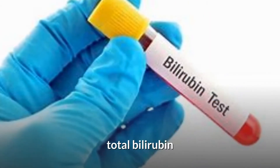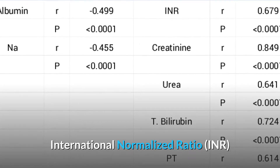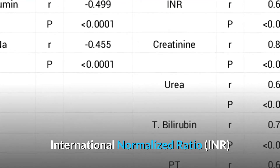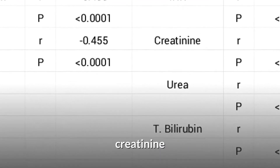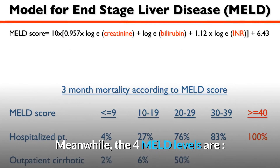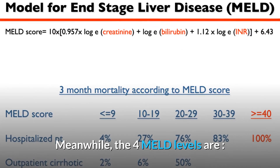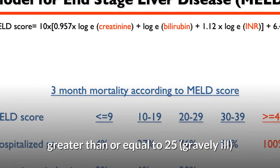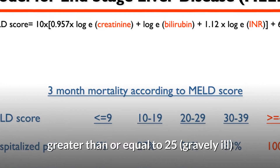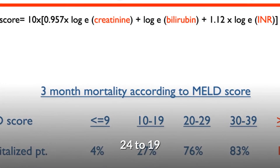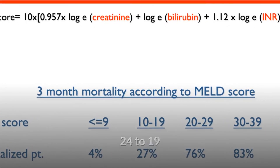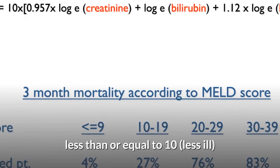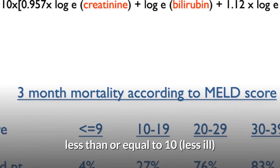The MELD score is calculated using a mathematical formula with three lab results: total bilirubin, international normalized ratio (INR), and creatinine. The four MELD levels are: greater than or equal to 25 (gravely ill); 19–24; 11–18; and less than or equal to 10 (less ill).